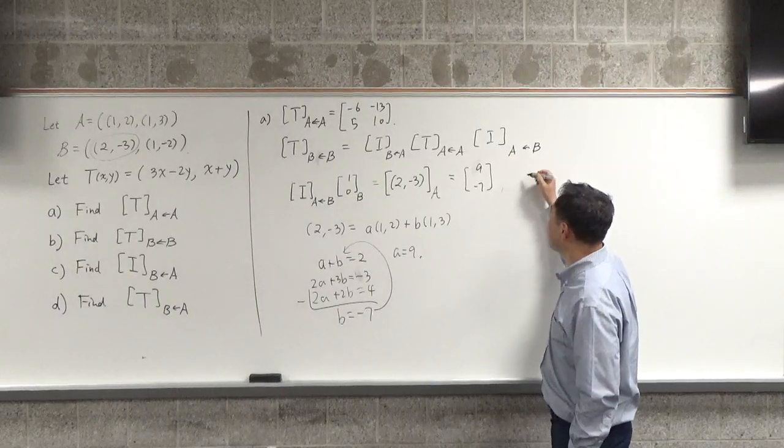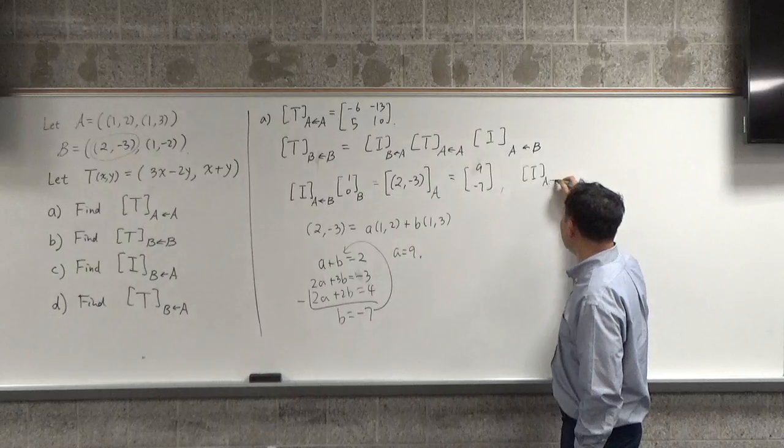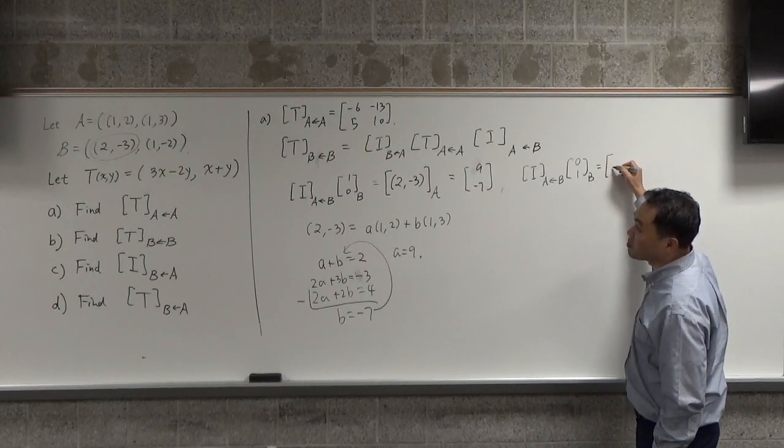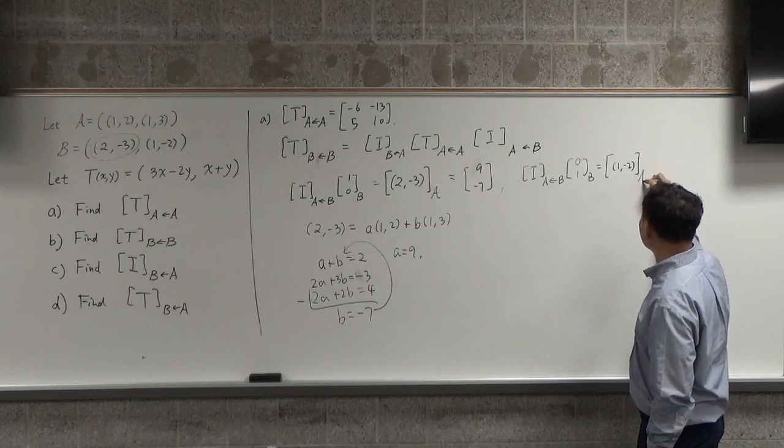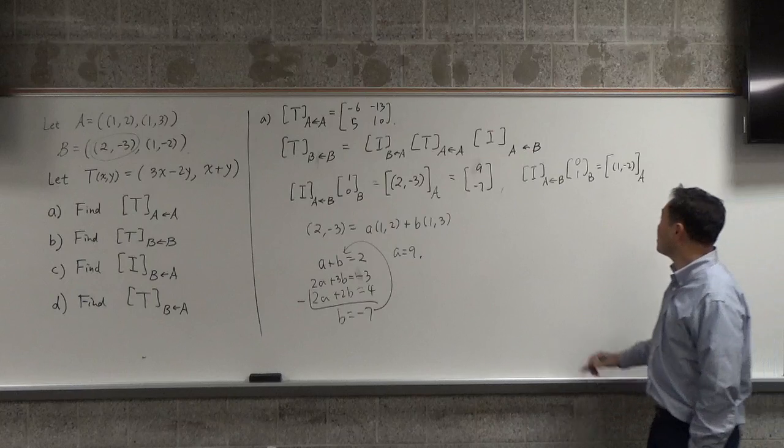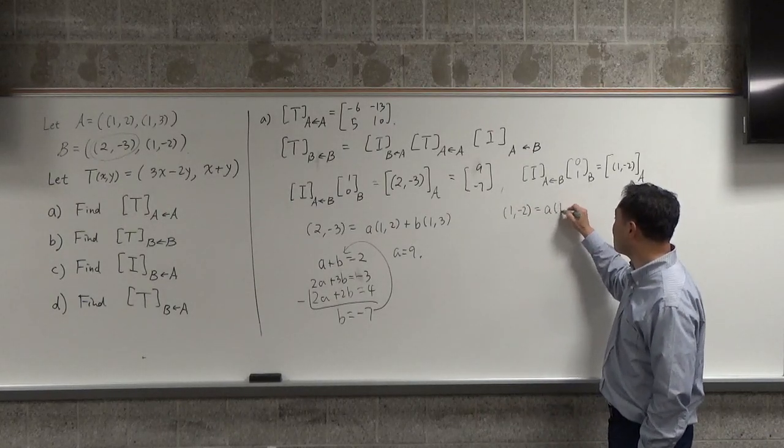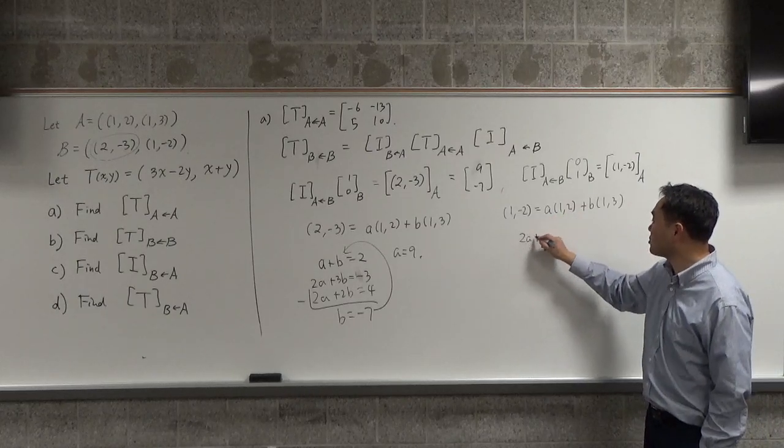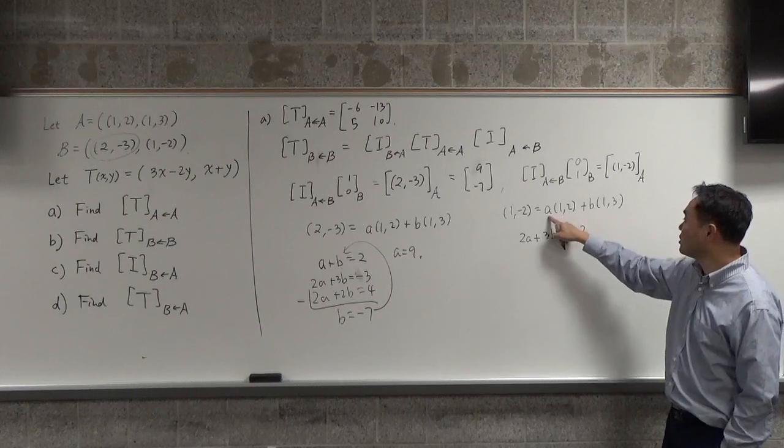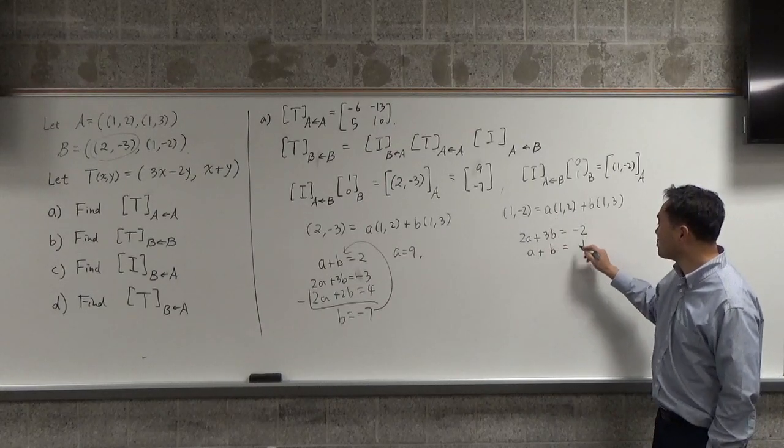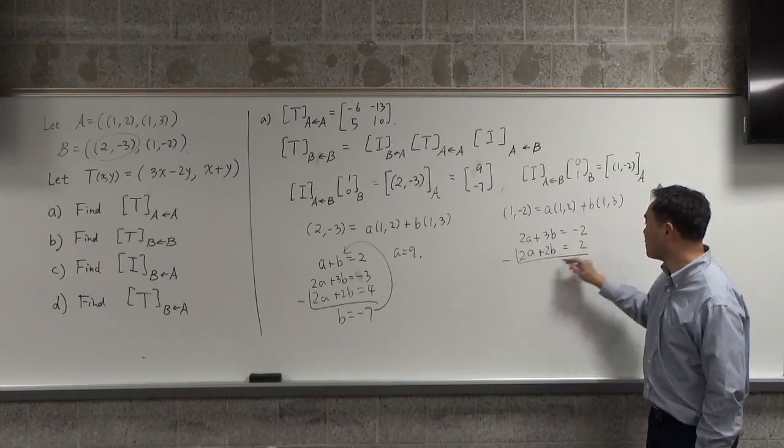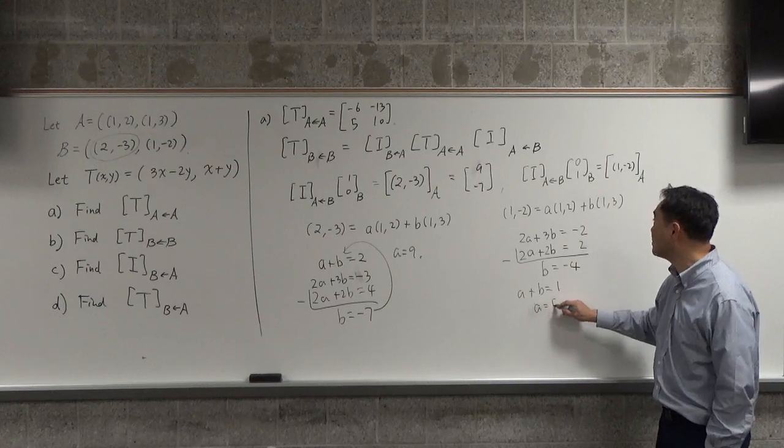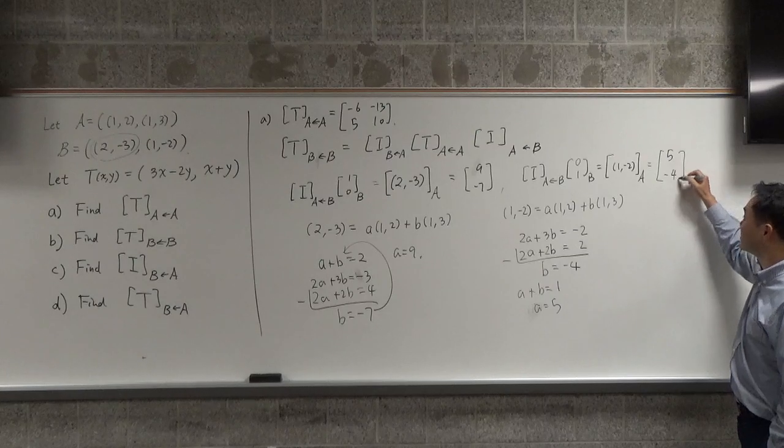And then, you do the same thing. I, A to B, to apply to (0,1)_B, should be this, the vector (1,-2), represented under basis A. So, that's saying, (1,-2) has to be represented as A times (1,2) plus B times (1,3). Let me write the second part first. We've done this many times. 2A plus 3B should be negative 2. And then, the first one, A plus B, must be 1. So if I multiply by 2, and then subtract, you get B as negative 4. But, A plus B has to be 1. So, A has to be 5. So, I know that this must be 5, negative 4.